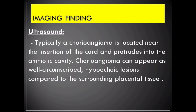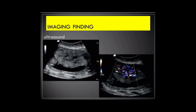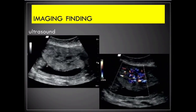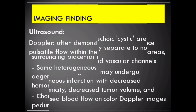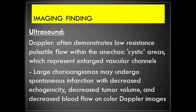On ultrasound, a chorioangioma is typically located near the insertion of the cord and protrudes into the amniotic cavity. It appears as a well-circumscribed hypoechoic lesion compared to surrounding placental tissue, usually containing anechoic cystic areas and distinctly separate from normal surrounding placental tissue. Doppler often demonstrates low resistance pulsatile flow within the anechoic cystic areas, which represent enlarged vascular channels.